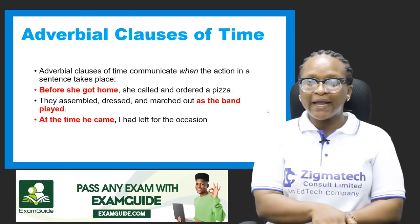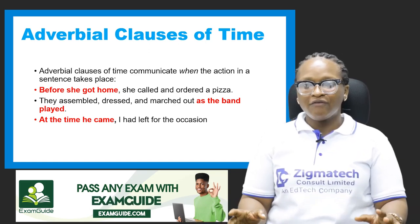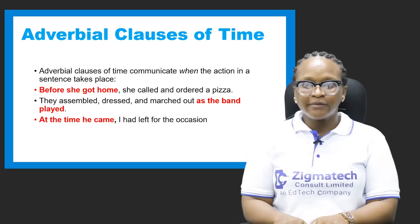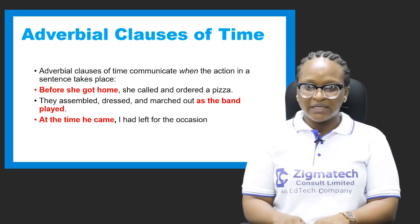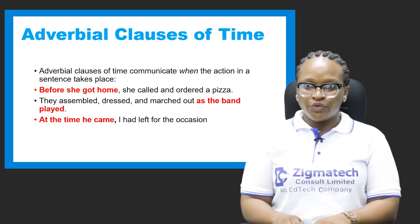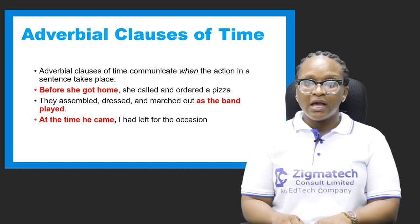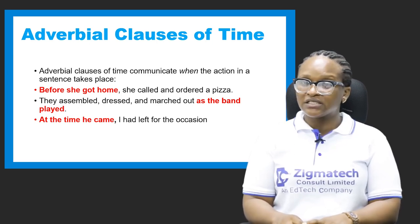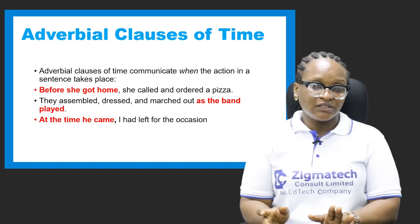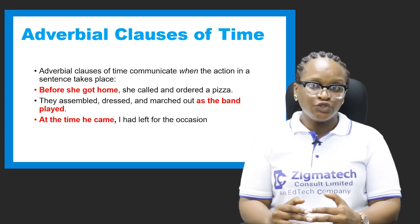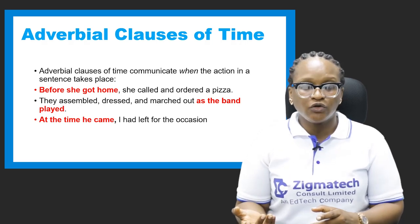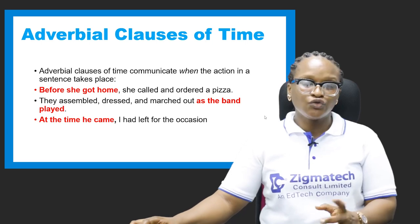Adverbial clause of time answers the question 'when.' Examples: 'Before she got home, she called and ordered pizza.' 'They assembled, dressed and marched out as the band played.' 'At the time he came, I had left for the occasion.' In exam conditions, you can go an extra mile by indicating the specific type of adverbial clause — for example, adverbial clause of time rather than just adverbial clause — as this gives you an edge.